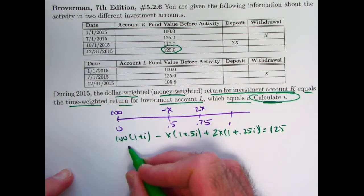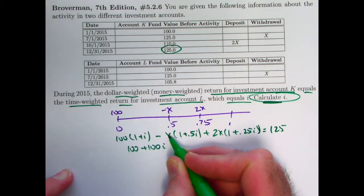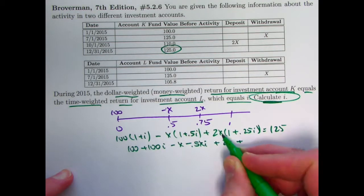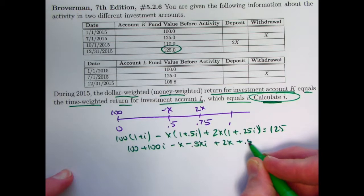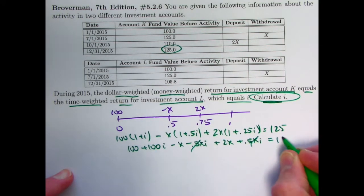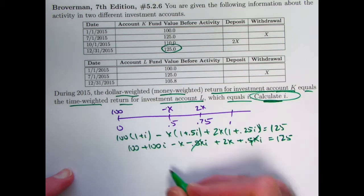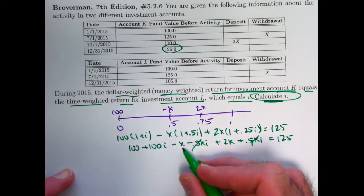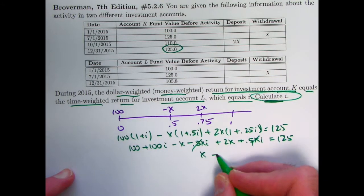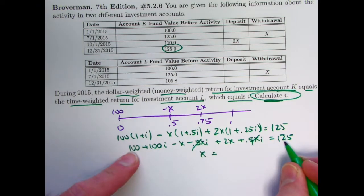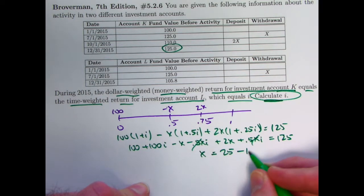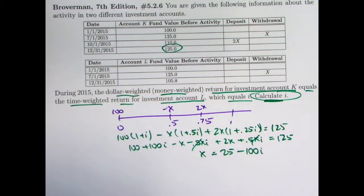This becomes 100 plus 100i minus x minus 0.5xi and then plus 2x plus 0.5xi. Those two things cancel. Equals 125. We want to get it in terms of x. We want to solve for x. We've got negative x plus 2x is x. We've got 125 minus 100 is 25. And then we've got 100i there that we can subtract from both sides to get that x is 25 minus 100i. So that's how x depends on i in the first situation.